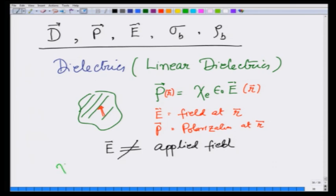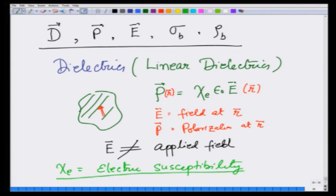Chi_e is known as the electric susceptibility — that is, how susceptible or how responsive the system is to the applied electric field, or to the field locally at that point. Chi_e measures that.